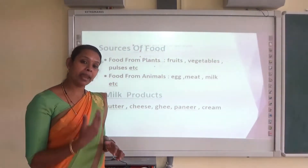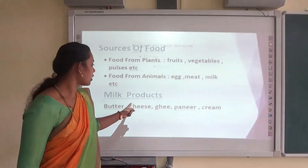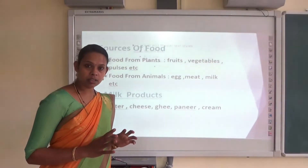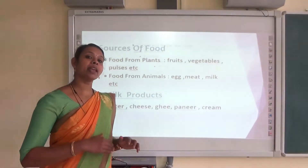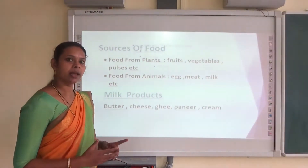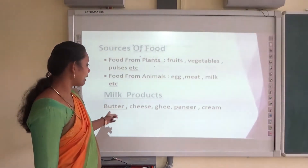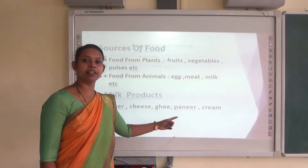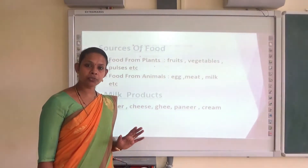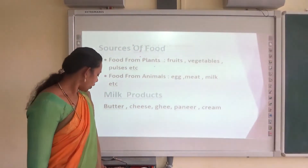Some of the food items can be made by using milk — they are known as milk products. The food items which are made by using milk are known as milk products. And the examples are butter, cheese, ghee, paneer, cream, etc.